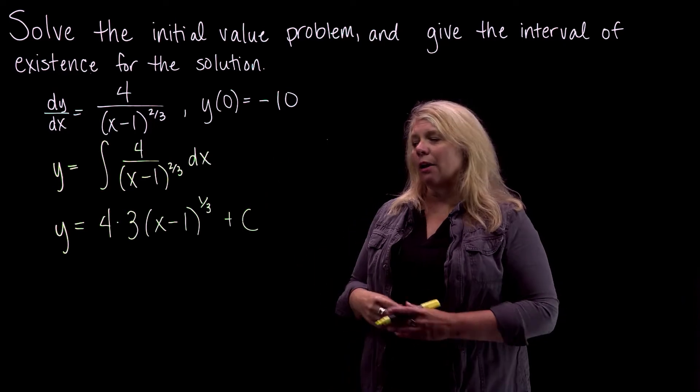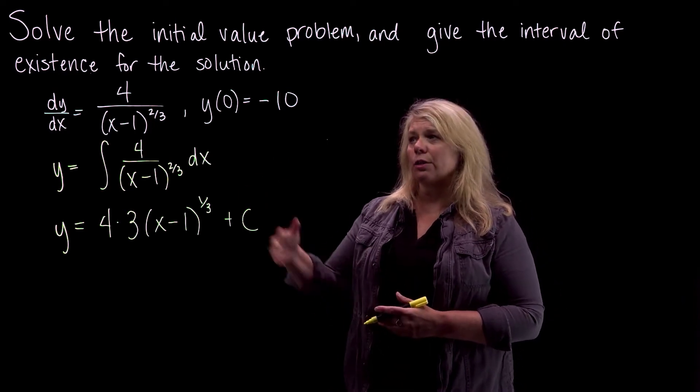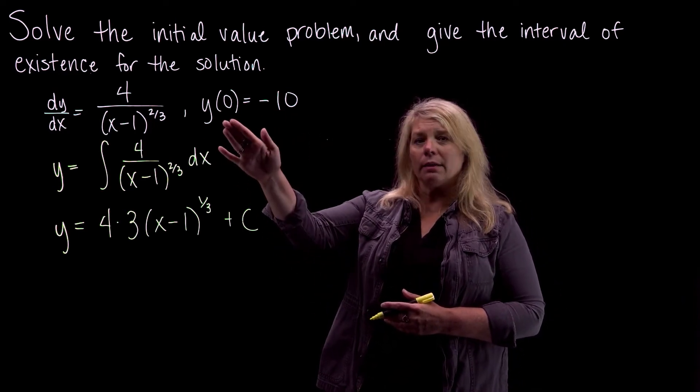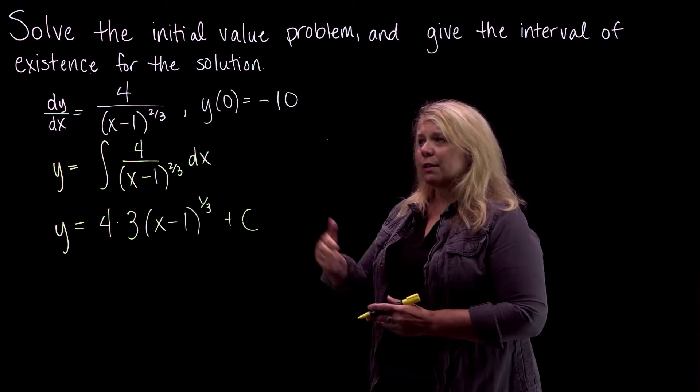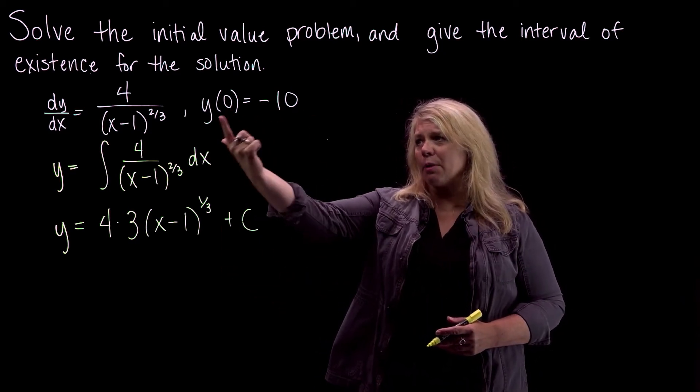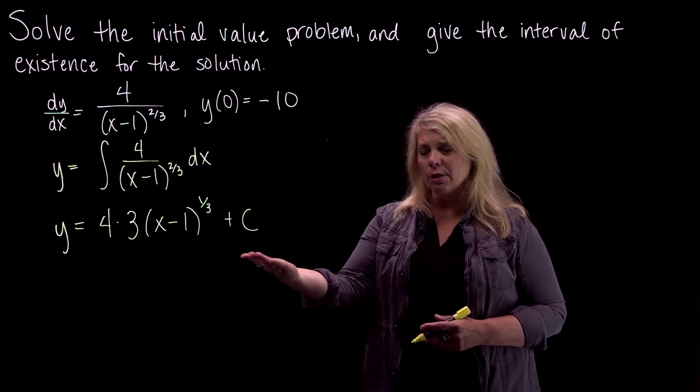Because I have an initial condition, I can go ahead and find the particular solution that goes through this point. It's really a point, 0 comma -10. So we'll go ahead and do that. I'm just going to be putting in the numbers for the appropriate variables here and use those to find my C.